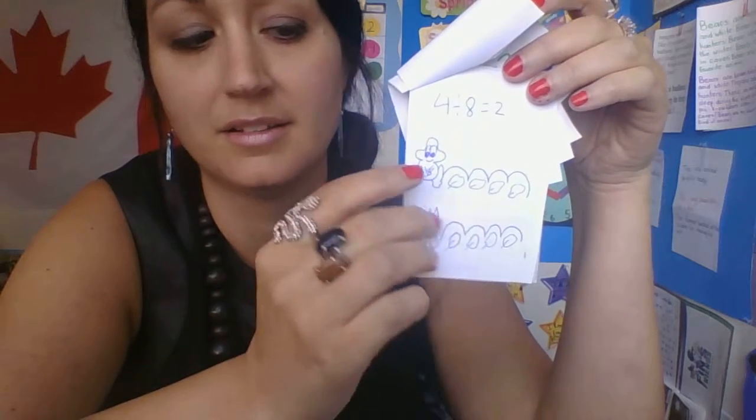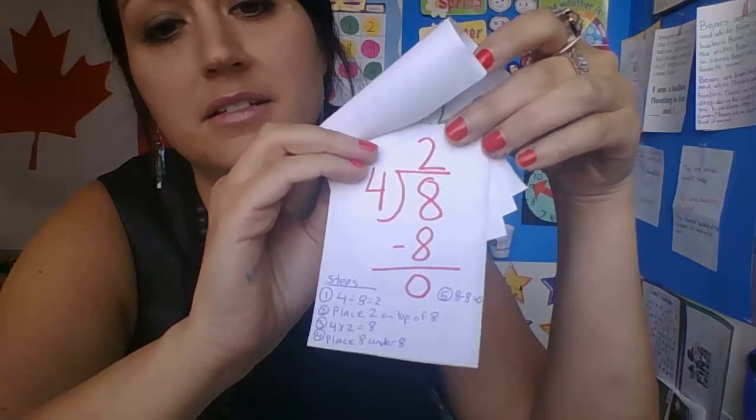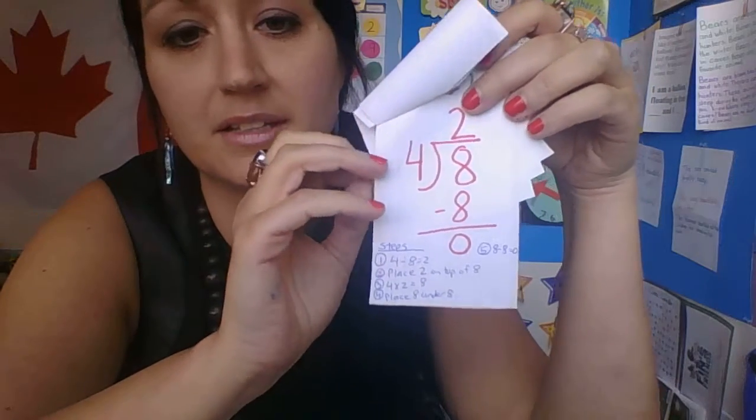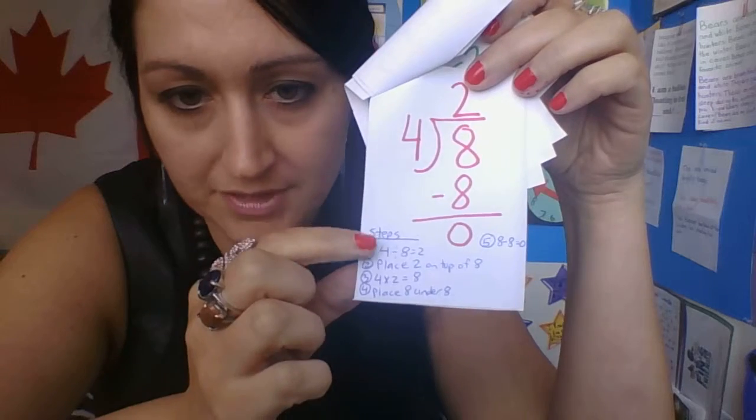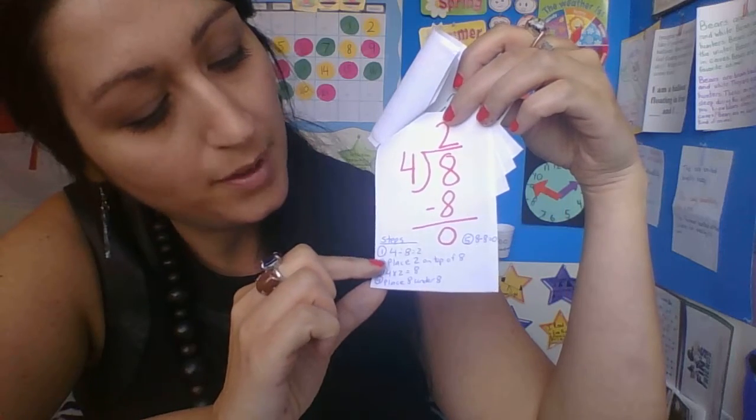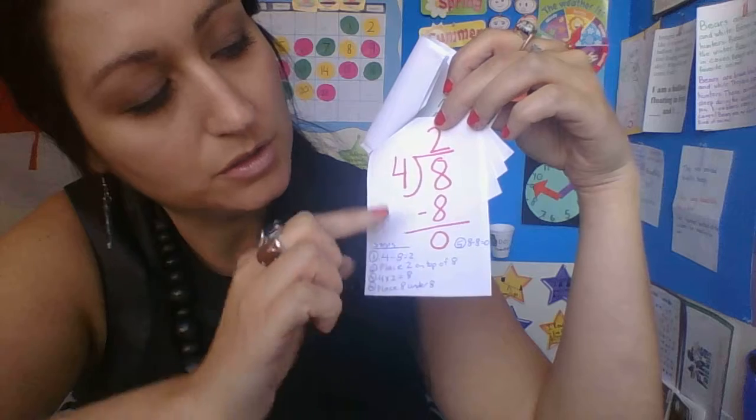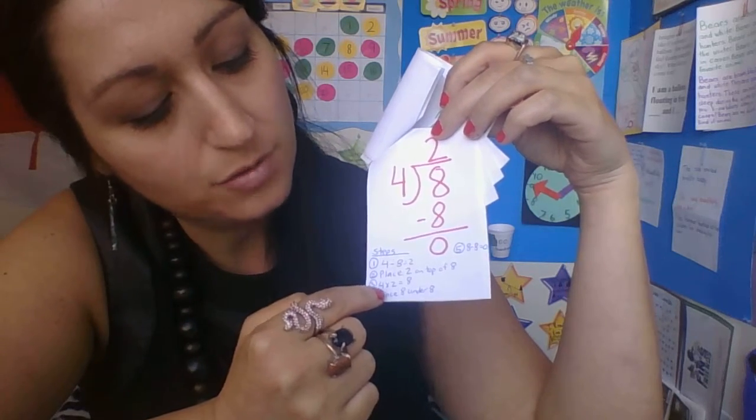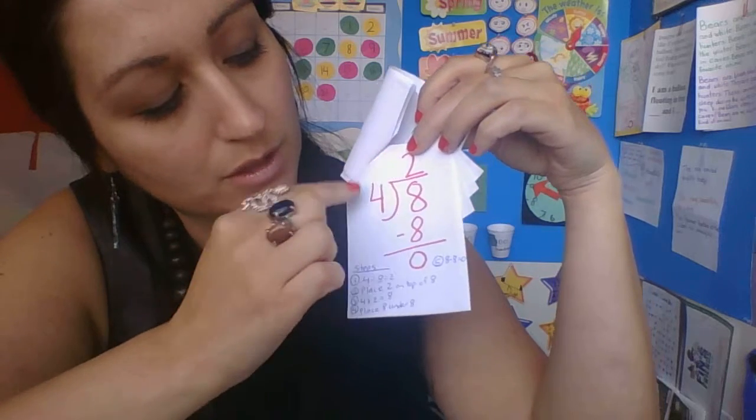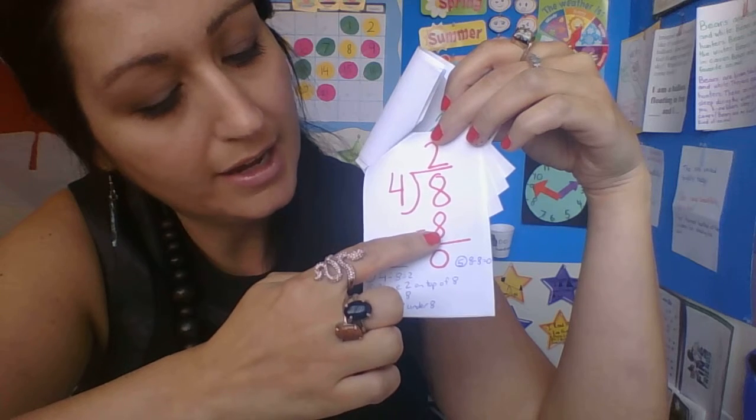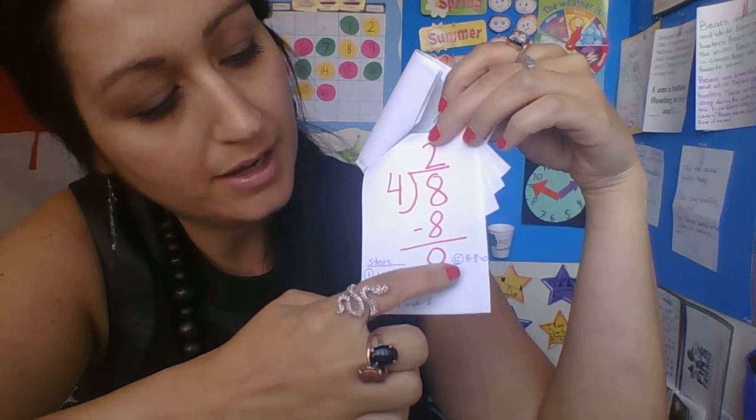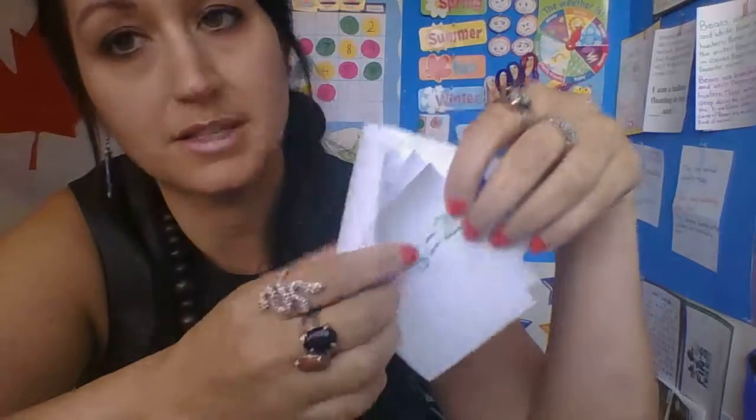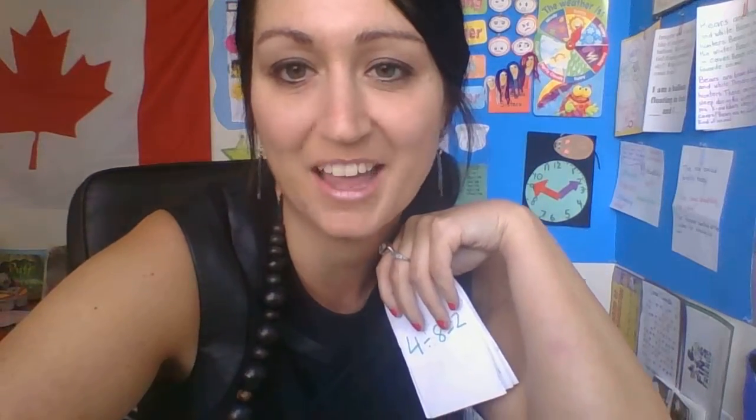This sign here is a fancy design representing division, and I have steps. Step one: four divided by eight equals two. Step two: place the two on top of the eight. Step three: four times two equals eight. Step four: place eight under the eight. Step five: eight minus eight equals zero. I hope that helps you with some insight, and we'll see you next time.